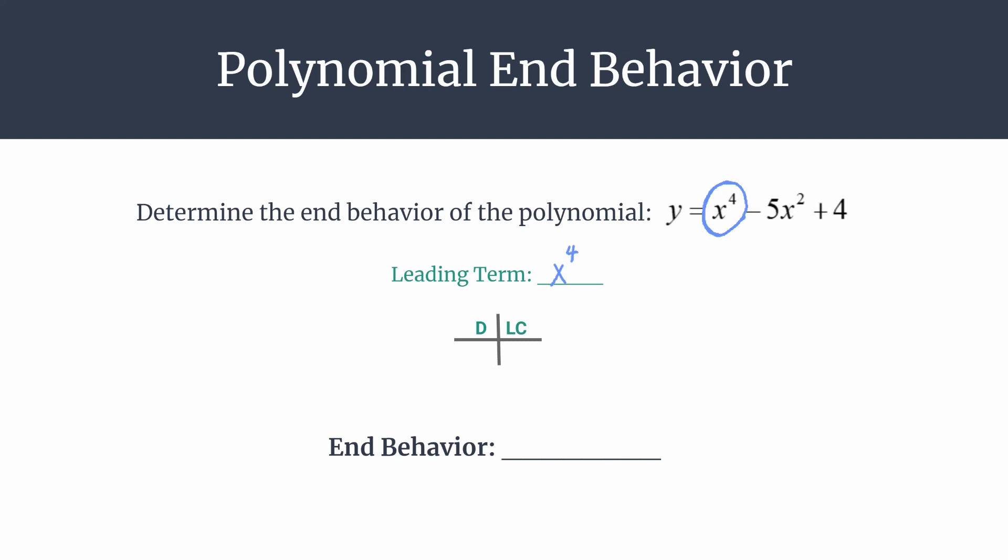So we see our degree or our exponent is 4. So we'll say our degree is even. Okay, 4 is even. And then our leading coefficient, of course, is positive.